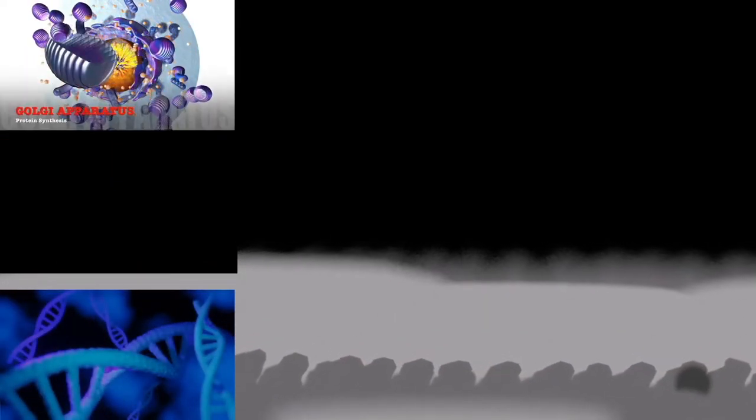When mitosis begins, the chromosomes condense and become visible. In some eukaryotes, for example animals, the nuclear envelope, which segregates the DNA from the cytoplasm, disintegrates into small vesicles. The nucleolus, which makes ribosomes in the cell, also disappears.